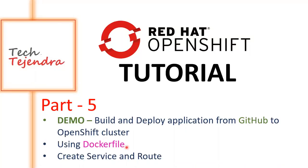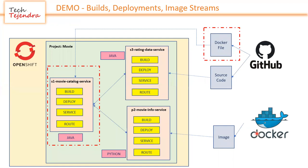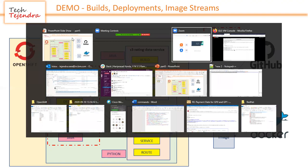We'll be deploying from GitHub using the Docker file strategy, where our Dockerfile is inside the GitHub repository. We'll get the Docker file and deploy our application into the OpenShift cluster. Inside our OpenShift cluster we have created a project called 'movie'. Applications p2 and s3 are already deployed there - those are three microservices: s1, s3 written in Java using Spring Framework, and p2 written in Python. P2 was deployed using the Docker image strategy, s3 using the S2I strategy, and now we will deploy s1 using the Docker file strategy.